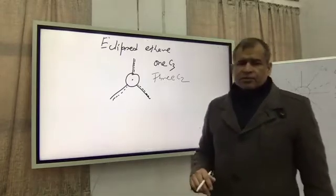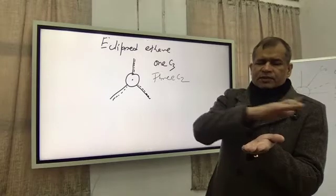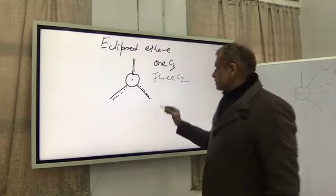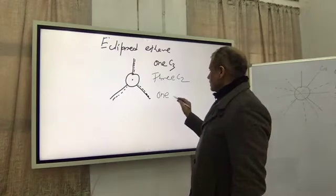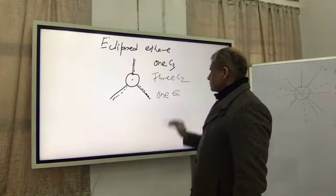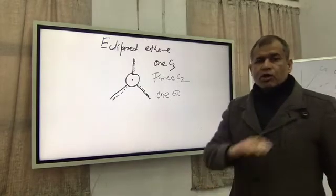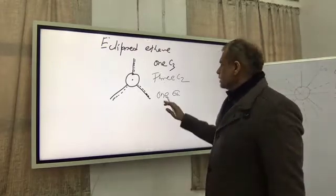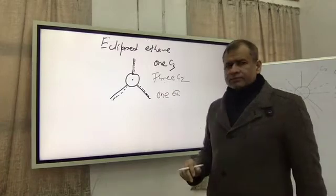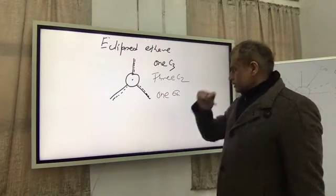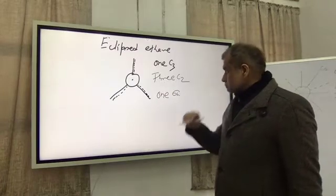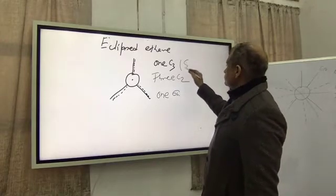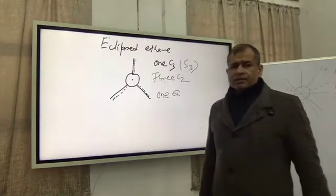Since it is the eclipsed situation, one sigma horizontal plane is present in the middle of the two triangles. So one sigma H is present — the sigma horizontal mirror plane. If one sigma H is present here, it means that this C3 is also acting as an S3 axis.